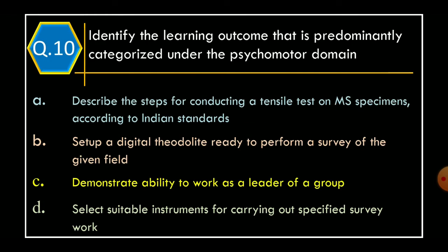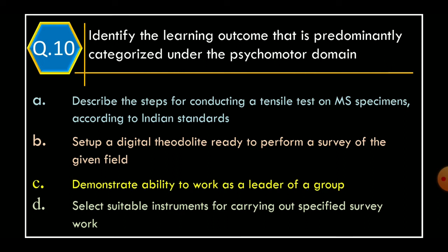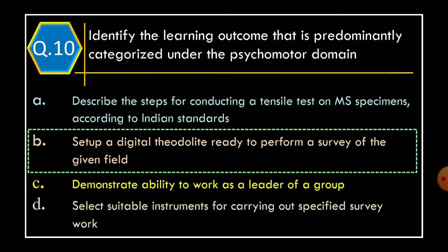Question 10: Identify the learning outcome that is predominantly categorized under the Psychomotor Domain. Option A: Describe the steps for conducting a tensile test on MS specimens according to Indian standards; Option B: Set up a digital theodolite ready to perform a survey of the given field; Option C: Demonstrate ability to work as leader of a group; Option D: Select suitable instruments for carrying out specified survey work. The correct option is Option B: Set up a digital theodolite ready to perform a survey of the given field.